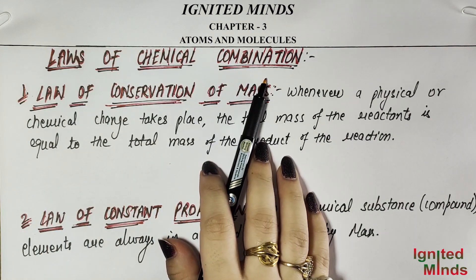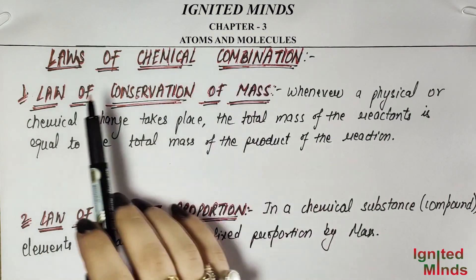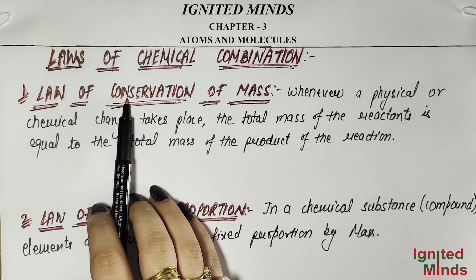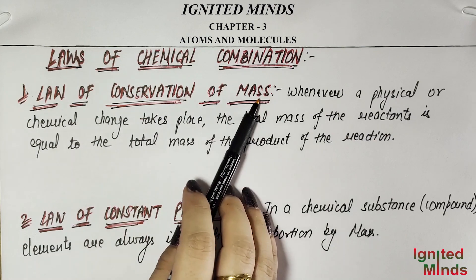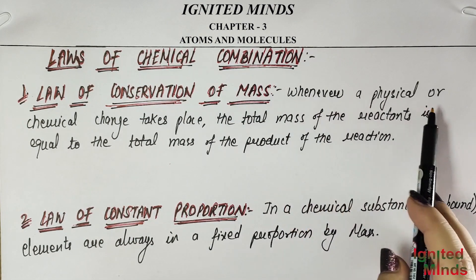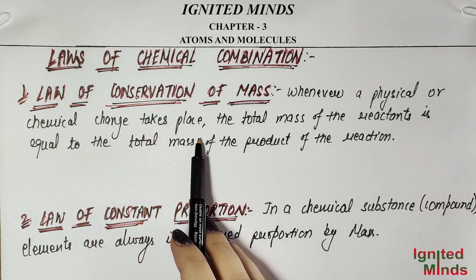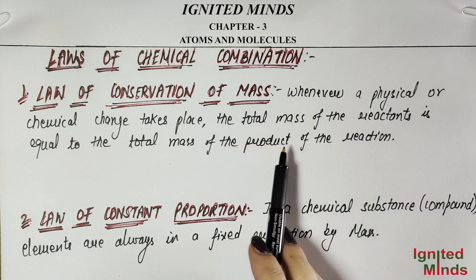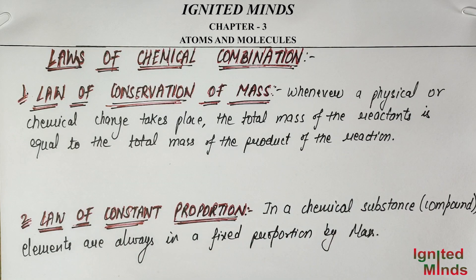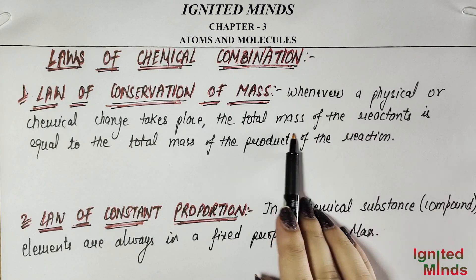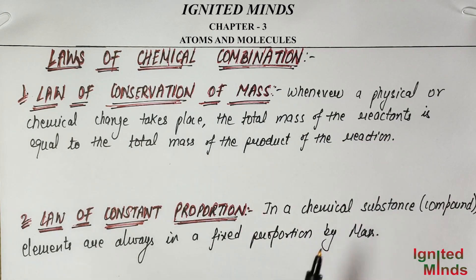Laws of Chemical Combination. The first law is the Law of Conservation of Mass. What does it mean? Mass is constant. Whenever a physical or chemical change takes place, the total mass of the reactants is equal to the total mass of the products of the reaction. So in any physical or chemical change, the mass of those who react is equal to the mass of the products. For example,